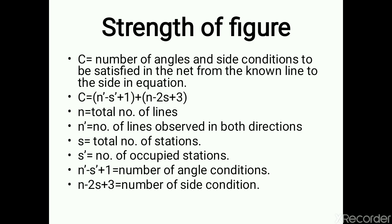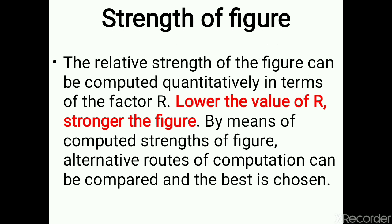C is the number of angle and side conditions to be satisfied in the net, calculated from the expression: C = (N' − S' + 1) + (N − 2S + 3). The term (N' − S' + 1) gives the number of angle conditions, and (N − 2S + 3) gives the number of side conditions. N is the total number of lines, N' is the number of lines observed in both directions, S is the total number of stations, and S' is the number of occupied stations.